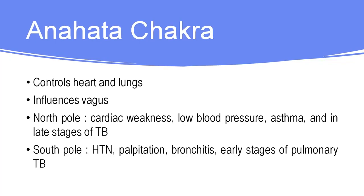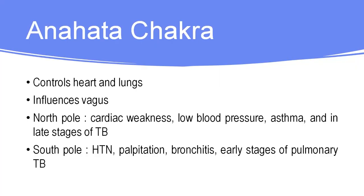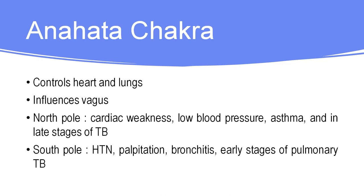Anahata chakra is located at the center of the heart and is used mainly for heart and lung-related conditions, including respiratory and cardiovascular disorders. It also influences the vagus nerve. The north pole is used in case of cardiac weakness, low blood pressure, asthma, and late-stage tuberculosis. The south pole is used in case of hypertension, palpitation, bronchitis, and early-stage pulmonary tuberculosis.